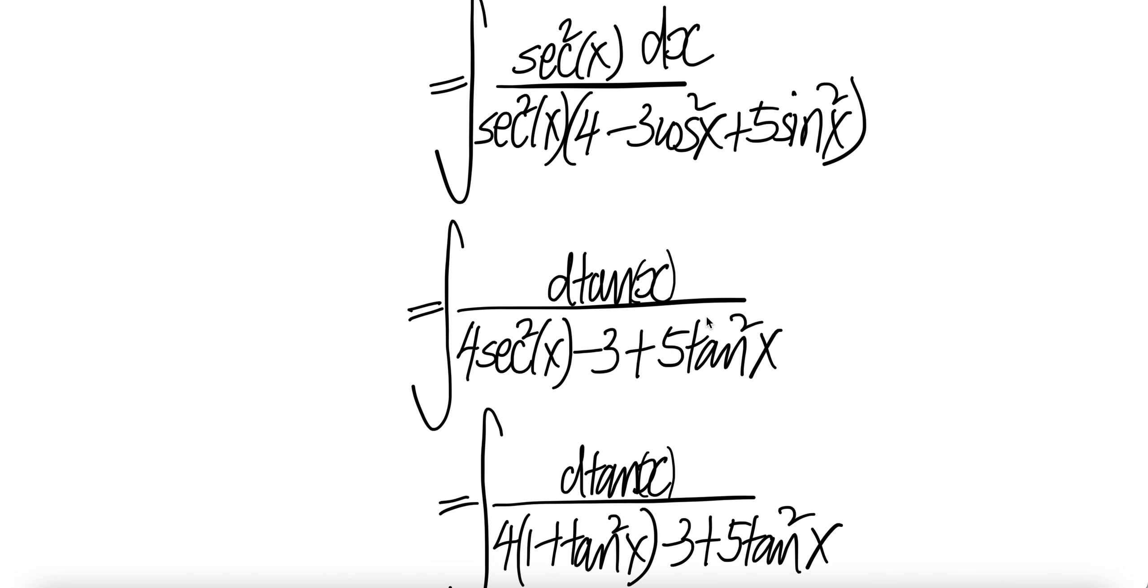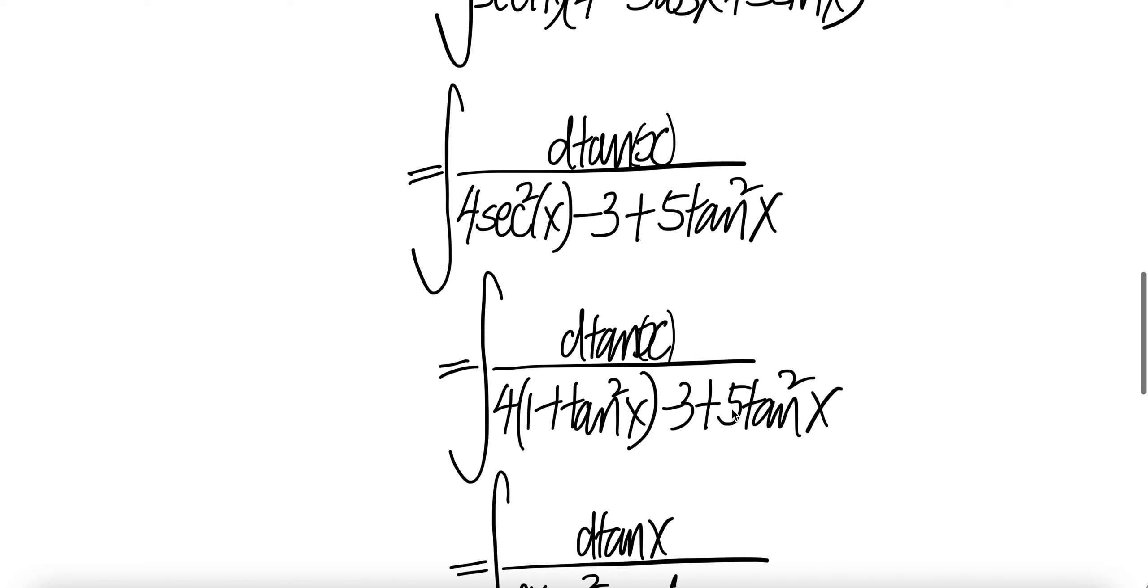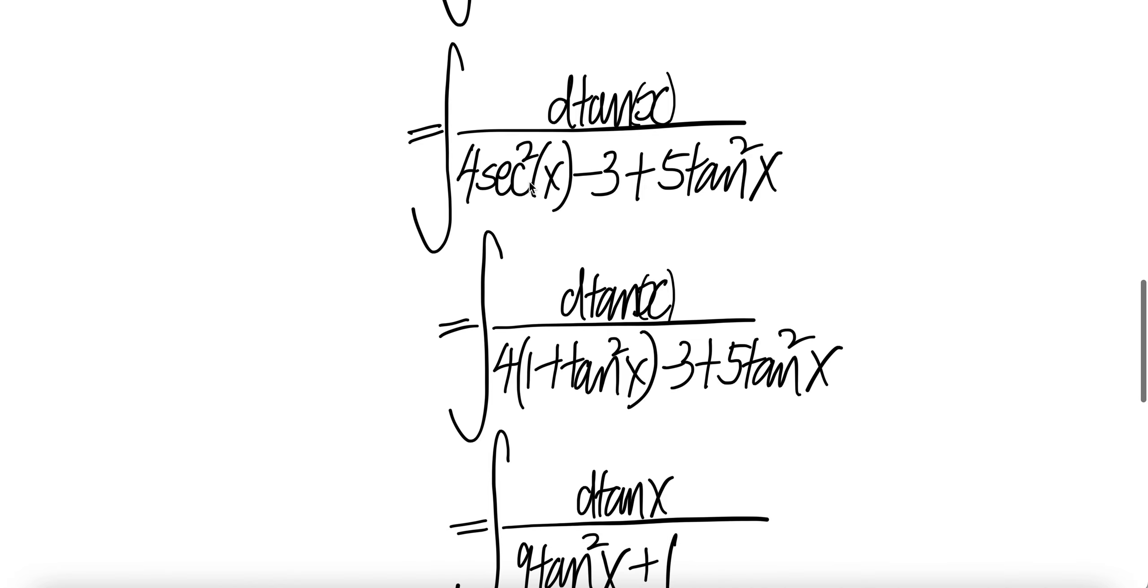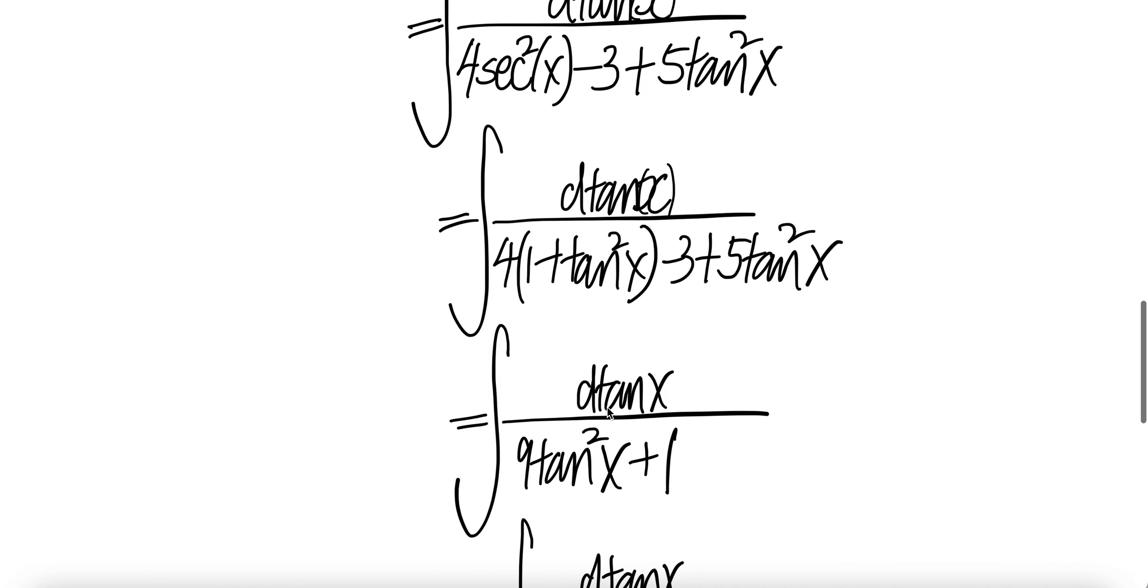And with that, you get 5 tangent square x because sine square x divided by cos square x is tangent square x. Write sec square x as 1 plus tangent square x. You have 4 of the square here and 5, 4 plus 5 is 9 tangent square x. And you have 4 here minus 3, you get 1.